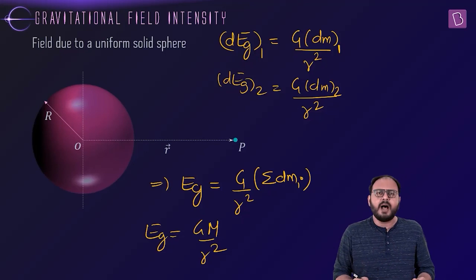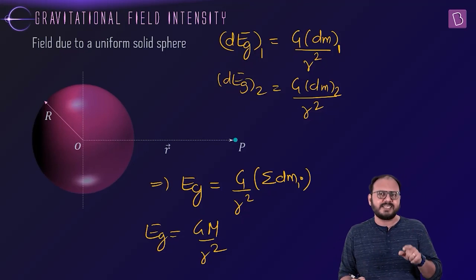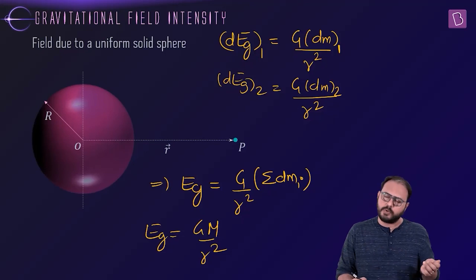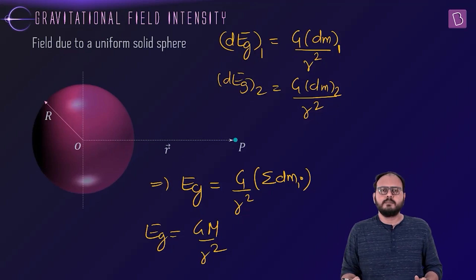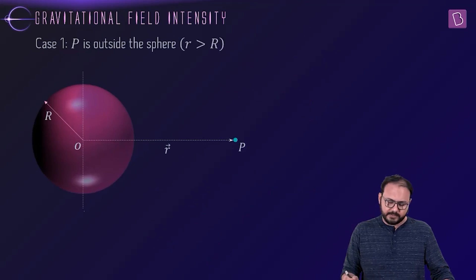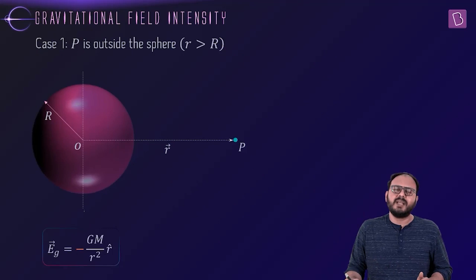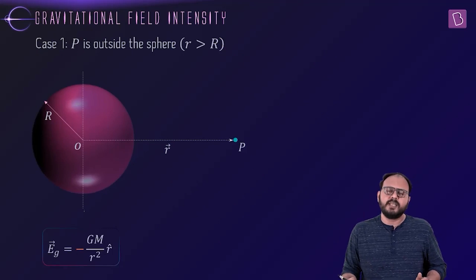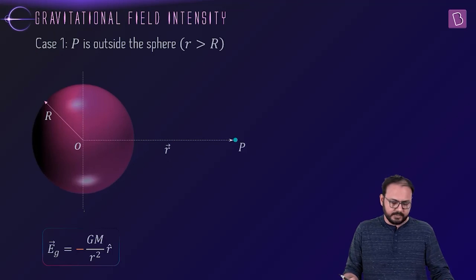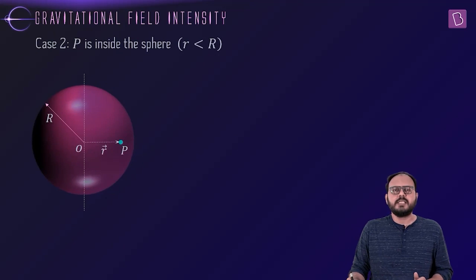I'm not done with inside yet. But I am done with at surface, because at surface will be GM by capital R square. For r greater than R, here we go. The minus sign is there for direction, really inwards.